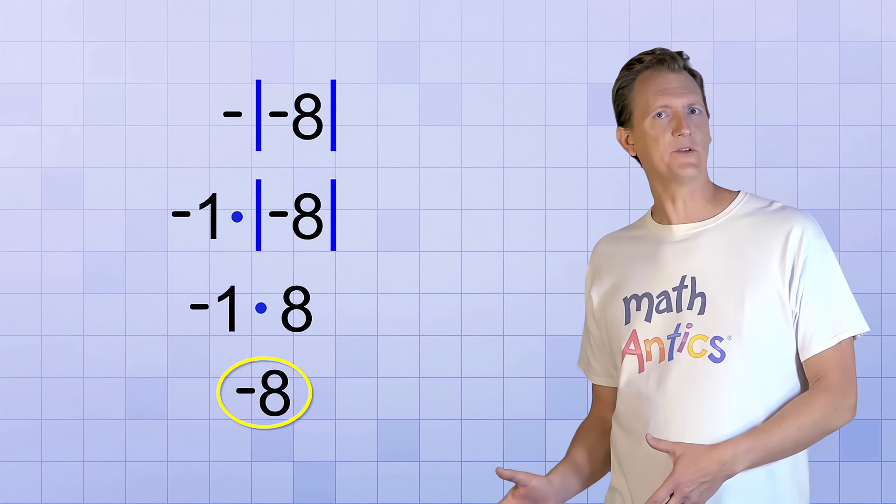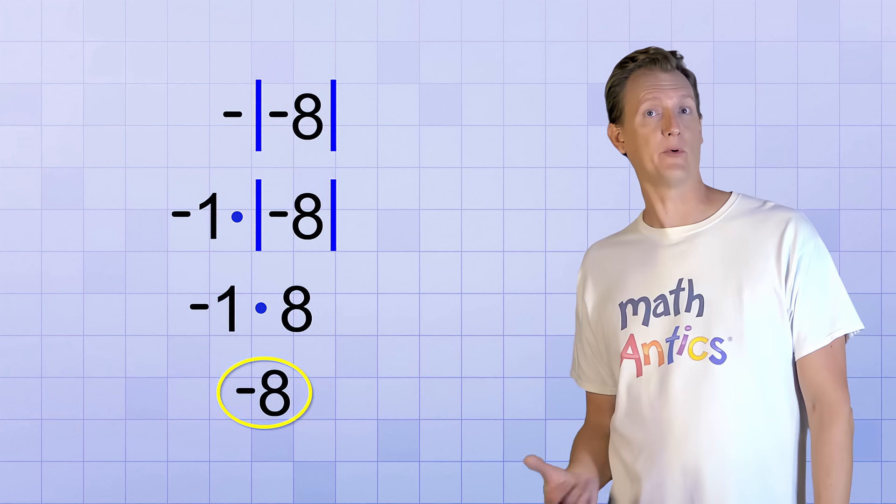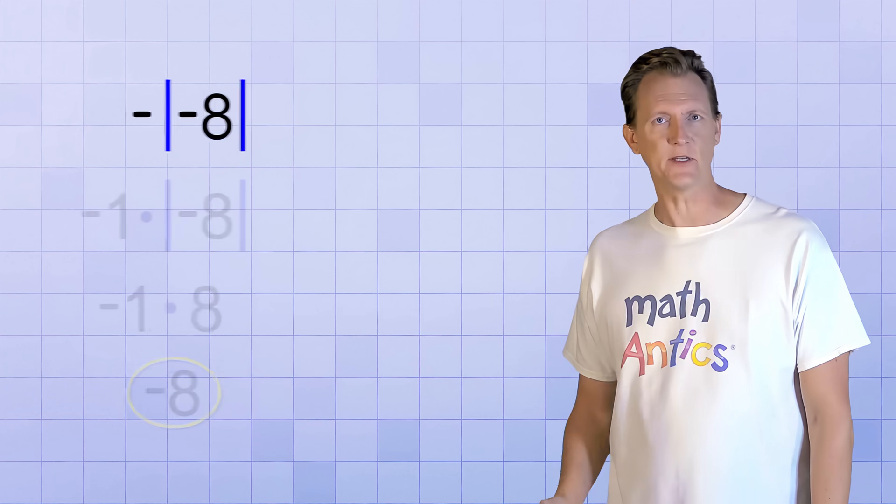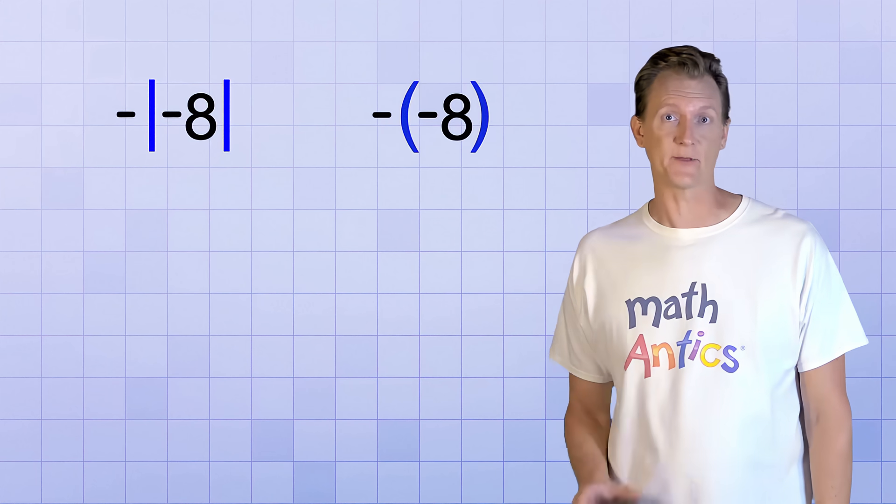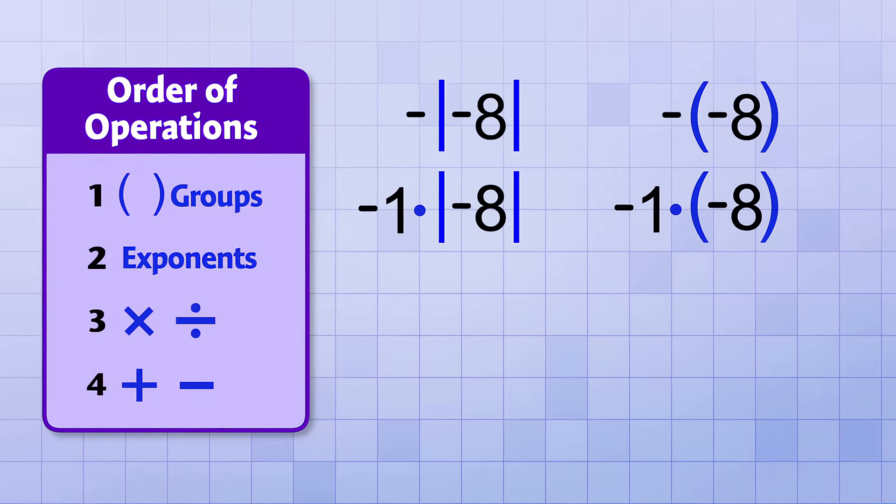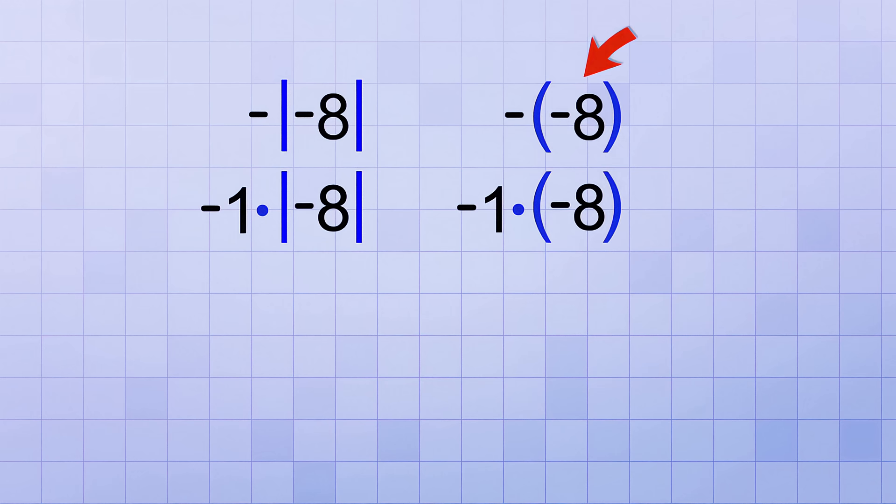That seems pretty simple too, but I want to use this example to point out an important difference between parentheses and absolute value signs. It's a difference that can trick you on a test if you're not careful. Let's see the expression we just simplified side by side with a similar expression that has parentheses instead of absolute value signs. In both of these cases, the negative sign outside the group is telling us to negate the group. That means multiplying it by negative 1. But there's a very important difference between the two expressions. The order of operations rules tells us to do things that are inside of groups first, right? But there's nothing to do inside the parentheses. It's just a negative 8 hanging out inside of them. And the parentheses themselves don't tell us to do anything. So this expression is just asking us to multiply negative 1 times negative 8, which is positive 8.